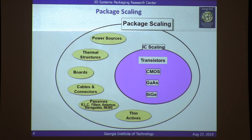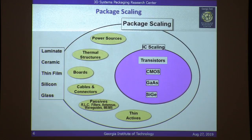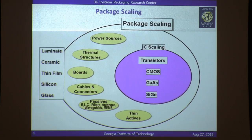Today, if you look at the cell phone industry, the trend is not towards making smartphones smaller but making them extremely thin. You're trying to back-grind the IC and embed it in the package to make systems ultra-thin. You can use organic laminate materials, ceramic materials, thin films, silicon, or glass-type materials — developing processes to take all these components and miniaturize them. So system scaling means miniaturizing both the transistors and the package, including all wiring outside the IC.